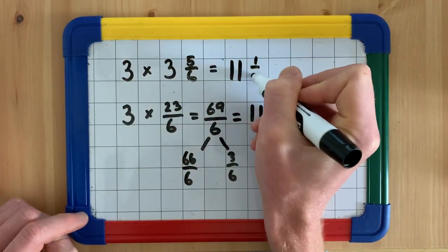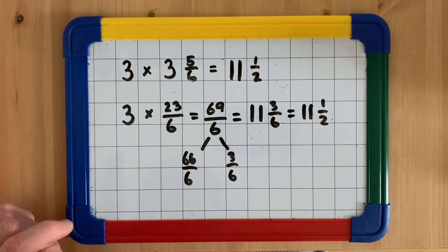So our answer, just like with our partitioning method, is 11 and a half.